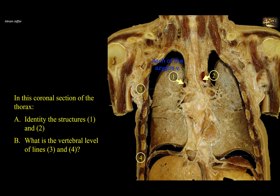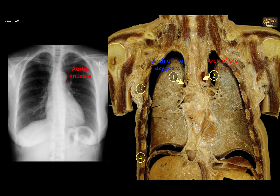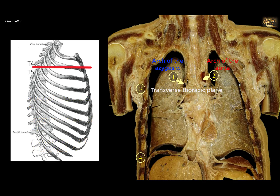Vessel 2, which arches above the root of the left lung, is obviously larger in size than 1 and thicker in its wall — it is the arch of the aorta, passing posterior and to the left. In an X-ray, it would produce what is termed the aortic knuckle on the left side of the cardiovascular silhouette. Line 3 is located at the level of the tracheal bifurcation — you can see the trachea here — and it is thus the transverse thoracic plane. The transverse thoracic plane passes through the sternal angle anteriorly and the intervertebral disc between T4 and T5 posteriorly.